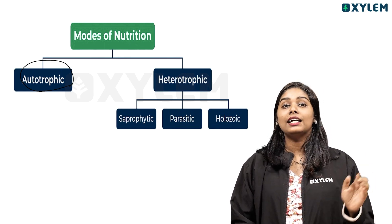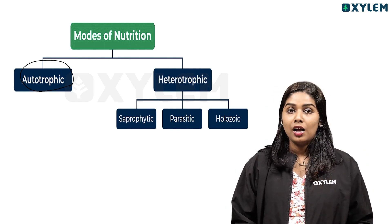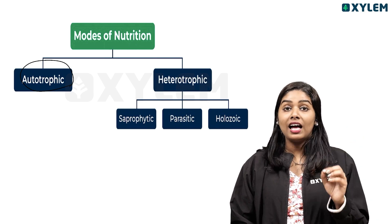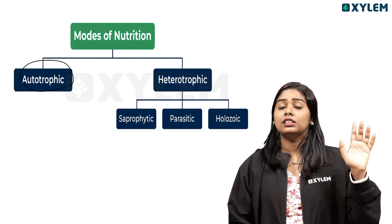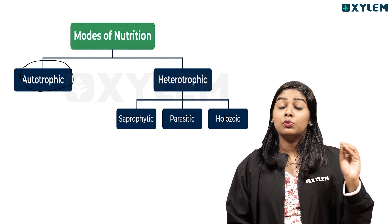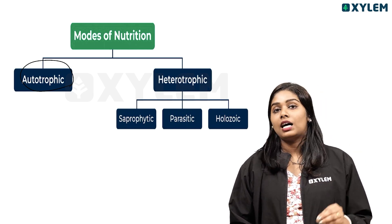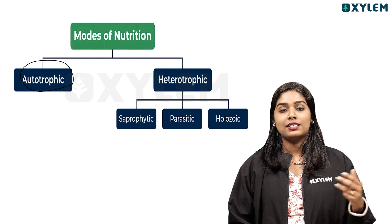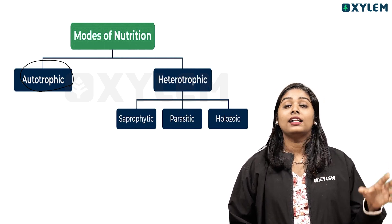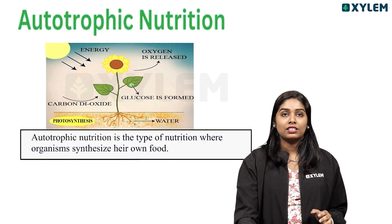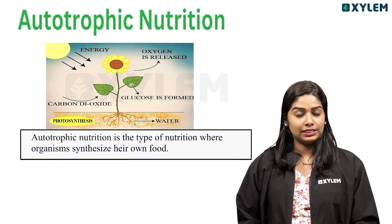Green plants, that is chlorophyll-containing plants, should be able to prepare their own food. Green plants use sunlight, nutrients, and water to prepare food. We call them autotrophic plants, because they can synthesize their own food. Autotrophic nutrition is the type of nutrition where organisms synthesize their own food.